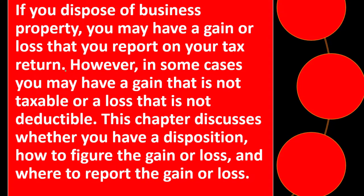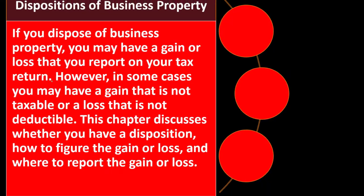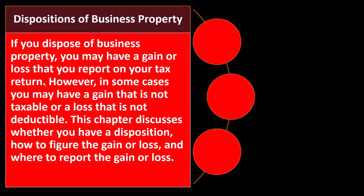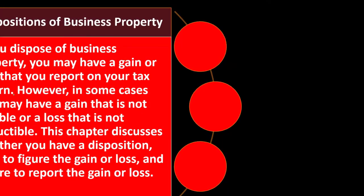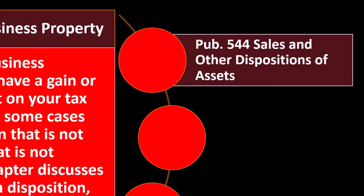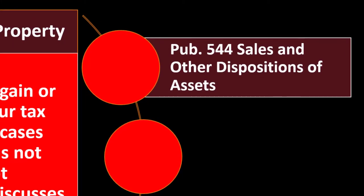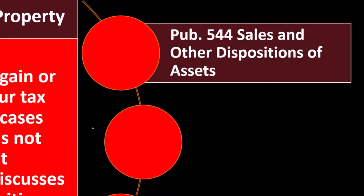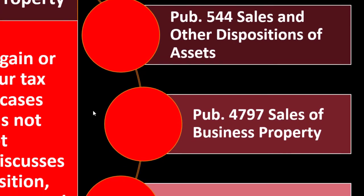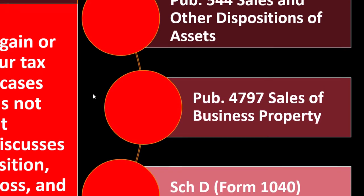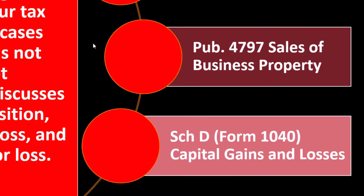In some cases you may have a gain that is not taxable or a loss that is not deductible. This section discusses whether you have a disposition, how to figure the gain or loss, and where to report it. See Publication 544, Sales and Other Dispositions of Assets, and Publication 4797, Sale of Business Property, as well as Schedule D for capital gains reporting.